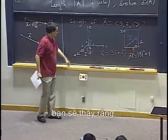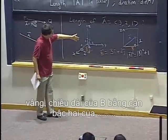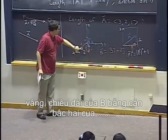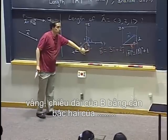OK, so if you do the calculations, you will see that length of B is square root of 3 squared plus 2 squared, that's 13, so square root of 13.